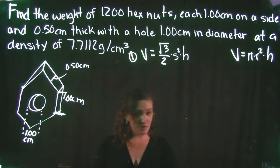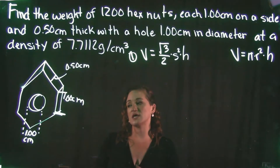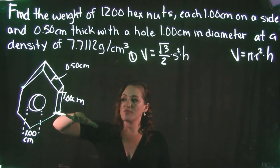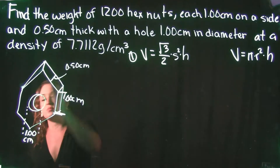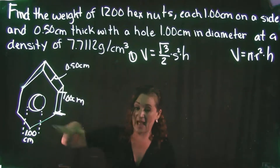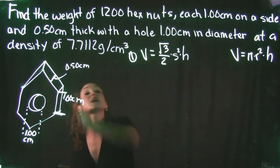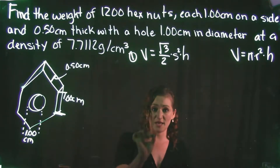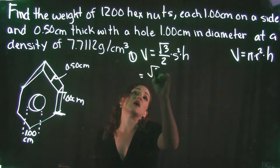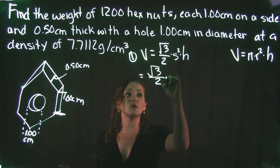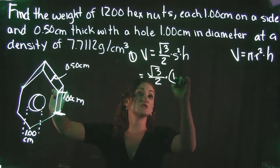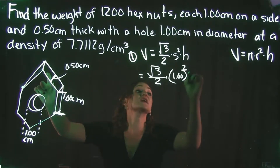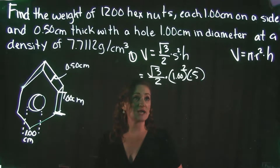For the height, we need to visualize the hex nut lying flat — the height is the thickness of the nut, not a point-to-point measurement. So the height is 0.5 centimeters. We need to make sure we have the correct formula values before plugging in.